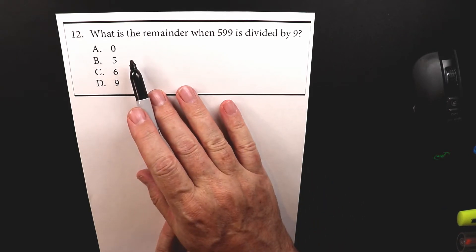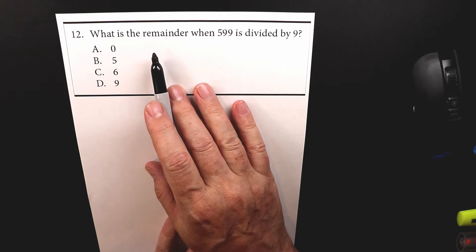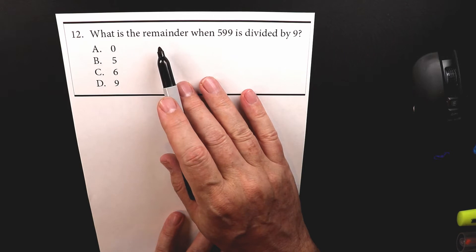So this one's similar to number nine when Zhao Ming was making cookies. You can go back to number nine and look at that one. In this case, we're looking for the remainder, what's left over.